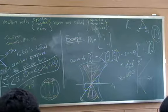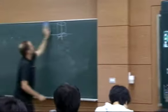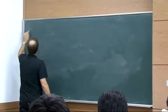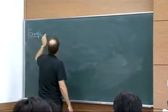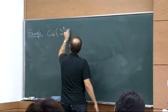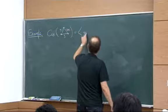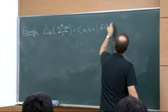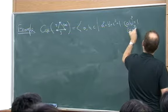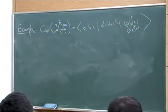Switching to a Coxeter group example: the Coxeter group for the (2,3,∞) diagram, with generators a, b, c satisfying a²=b²=c²=1, (ab)²=1, (ac)³=1, and no relation for the ∞ edge.